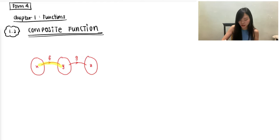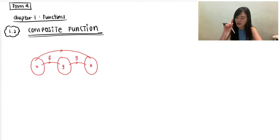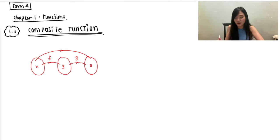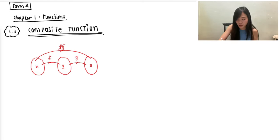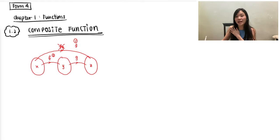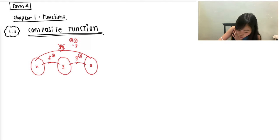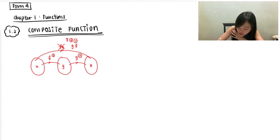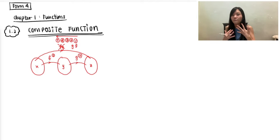So f is a function, g is a function, but if I go from x all the way to z, we call that a composite function. The bridge connecting x to z — you might want to write fg, but that's actually wrong. The first bridge you cross, you always write on the right-hand side. The second bridge you cross, you write in front. If there's a third one, write in front; fourth, in front — always forming the name from right to left.